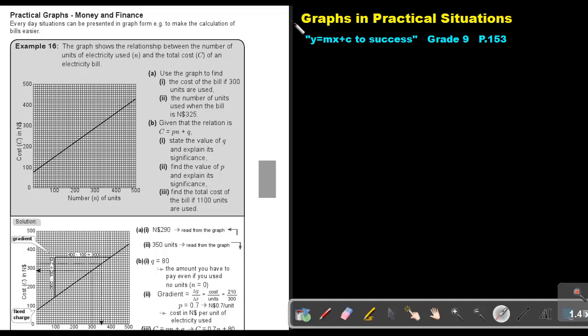Part 12. We are going to continue with graphs in practical situations. You will find this on page 153 in the Namibia Mathematics Grade 9 textbook, Y equals MX plus C to success. Practical graphs, money and finance. Everyday situations can be represented in graph form. For example, to make the calculation of bills easier. Let's look at an example.